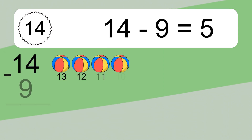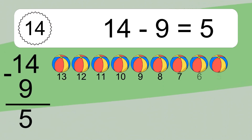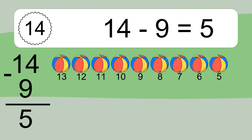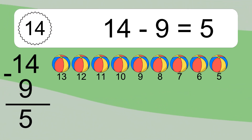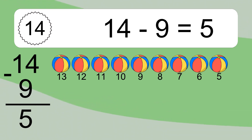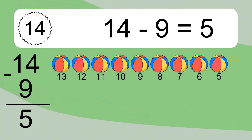14 minus 9 equals what? 14 minus 9 equals 5. Let's count it: 13, 12, 11, 10, 9, 8, 7, 6, 5.